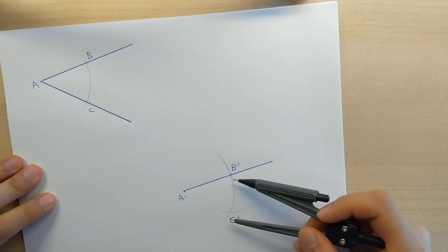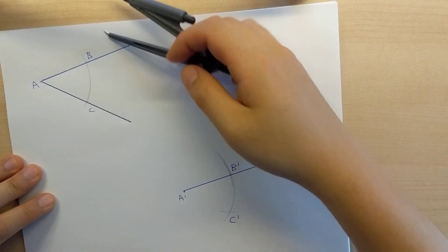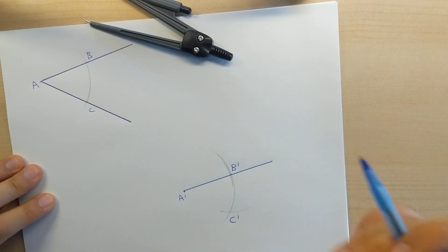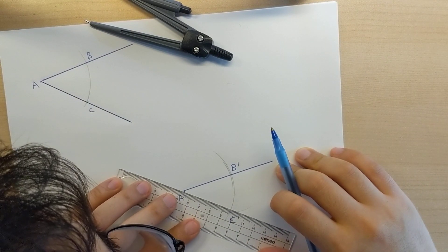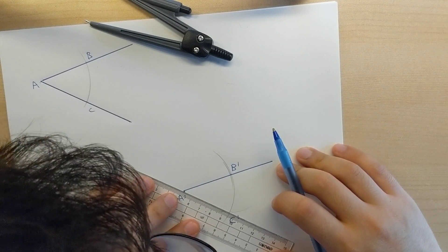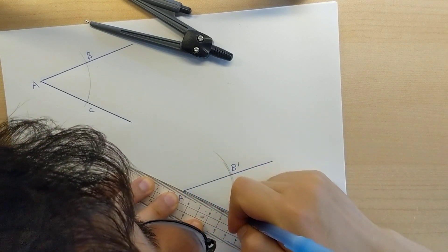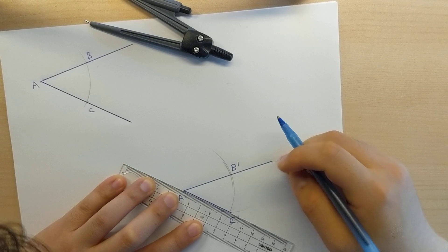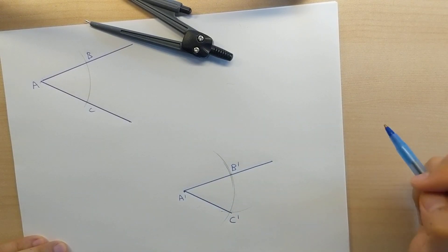This is the same measure. Here, these two things are the same measure. And then as for your last step, you're going to take your straight edge. You're going to connect A prime with C prime. And there you have it. That's the angle measure.